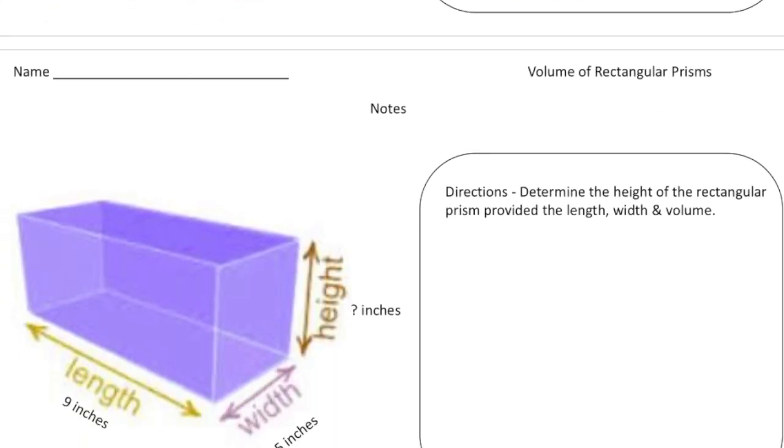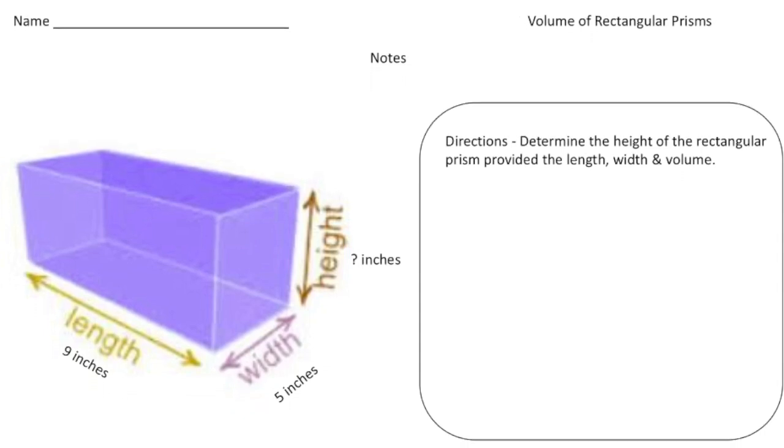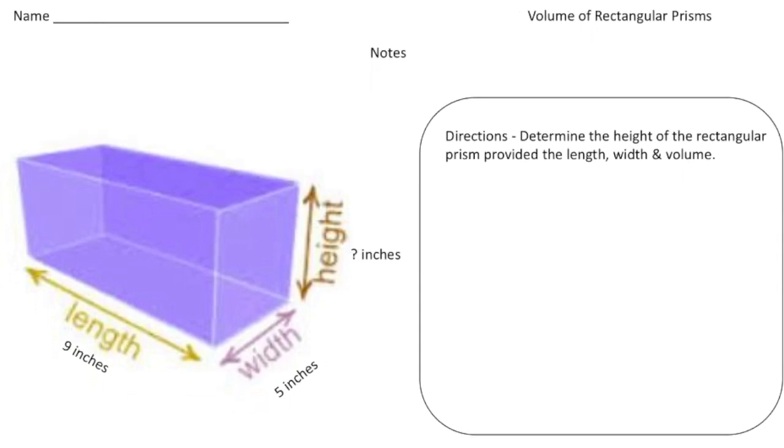This problem is going to show you how to find an unknown dimension when the volume is given. The directions say, determine the height of the rectangular prism provided the length, width, and volume. So this time we're trying to figure out what the height of the shape is when we know the length, width, and also the volume. So the volume of the shape is 450 cubic inches. Let's write that down.